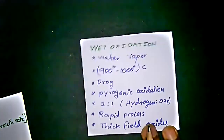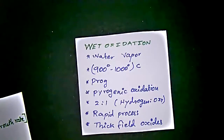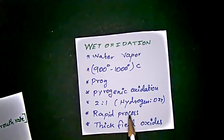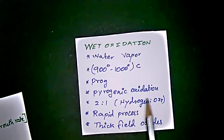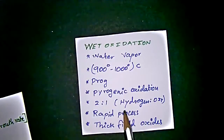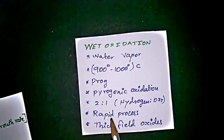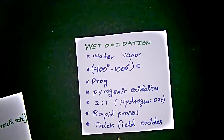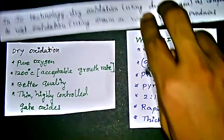For wet oxidation, it uses water vapor under a temperature condition of 900 to 1000 degrees Celsius. The hydrogen to oxygen ratio is 2 to 1. Wet oxidation is a rapid process and it gives thick field oxides.